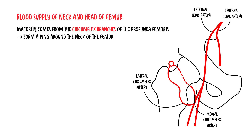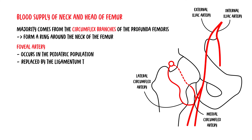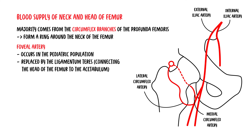Another direct source of supply to the femoral head is from the foveal artery, which only occurs in the pediatric population, because eventually this is replaced by the ligamentum teres — the ligament connecting the head of the femur to the acetabulum.